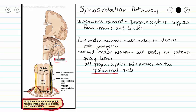We don't have a third order neuron here. Our second order neuron is going to synapse to a Purkinje cell. Purkinje cells are located in our cerebellum and they help tell our body where all of its parts are located.